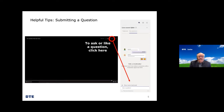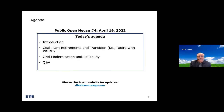For tonight's agenda, we're going to provide a brief recap of the first open house and review the survey feedback. Then we'll hear about DTE's approach to coal plant retirements and transitions, which we call Retire with Pride. Pride stands for People, Respect, Integrity, Dignity and Engagement. Following that, we'll learn how DTE is modernizing the electric grid and improving reliability. We will continue with a live Q&A session. Please remember to check DTECleanEnergy.com for updates on the Clean Vision Plan.